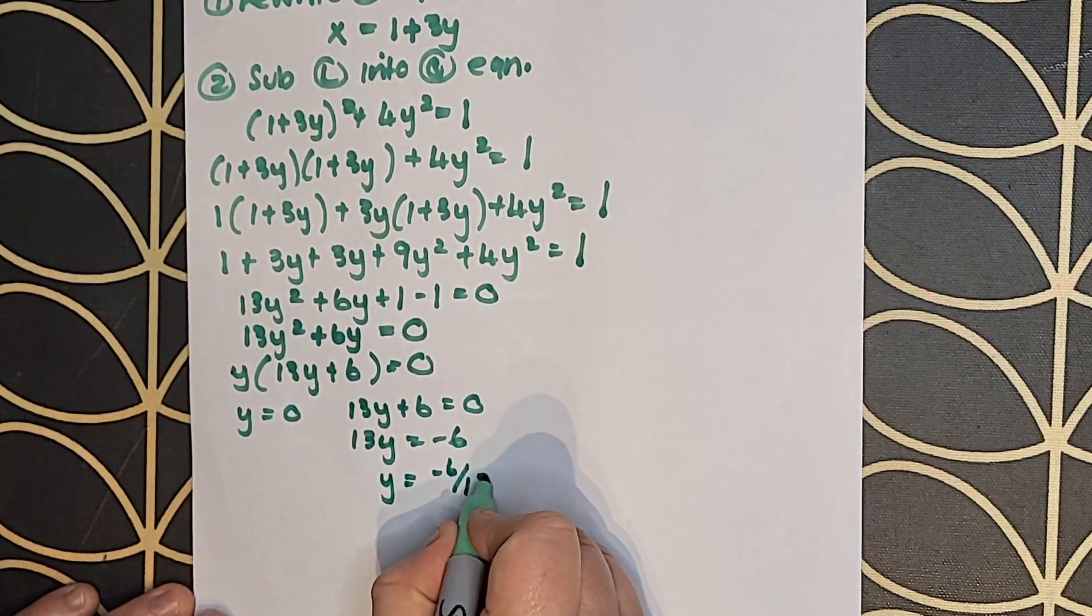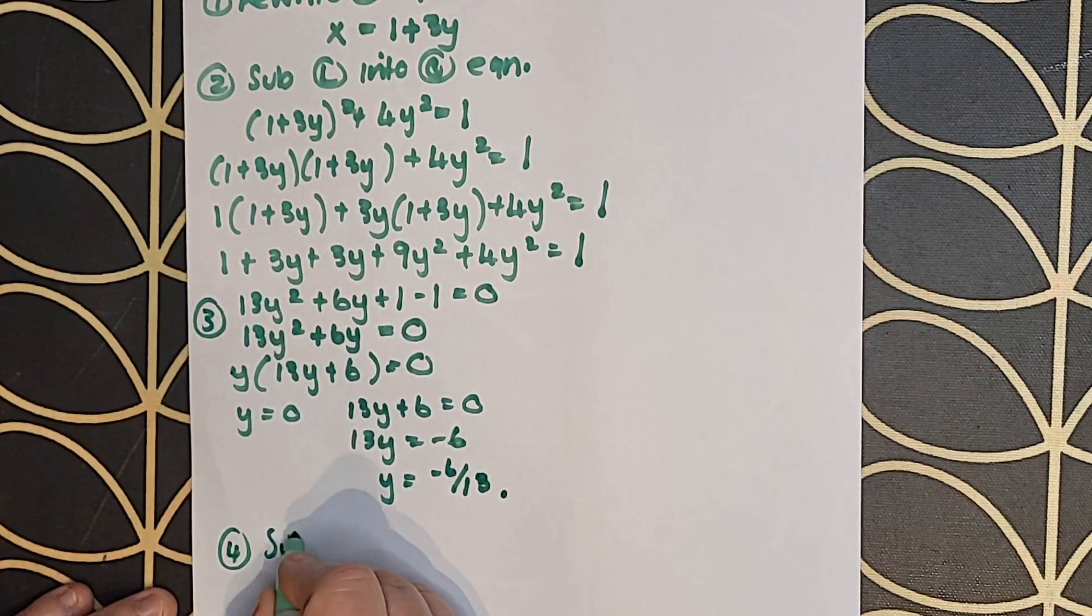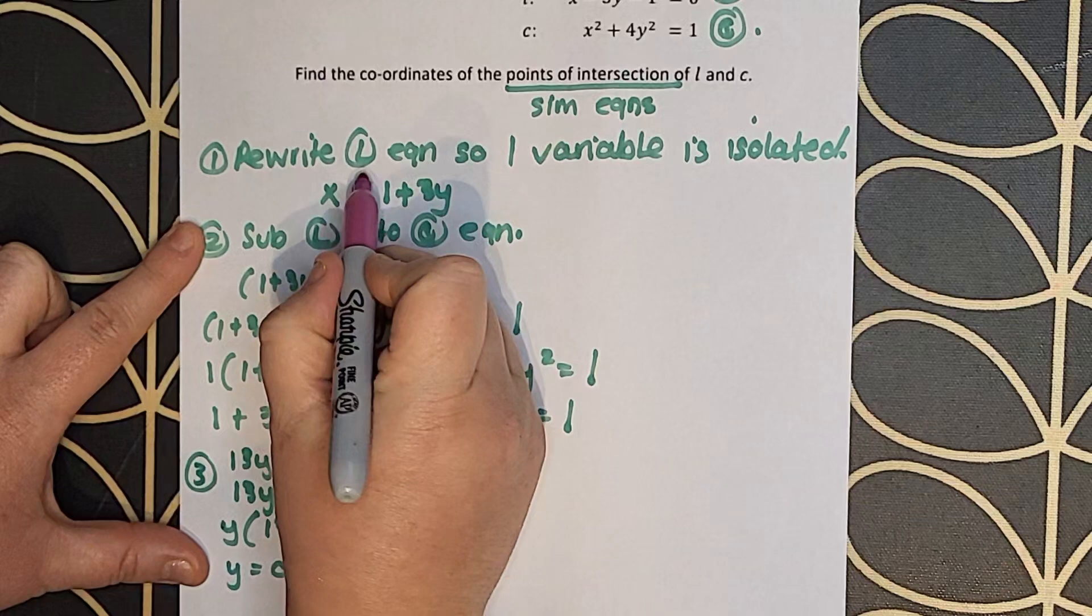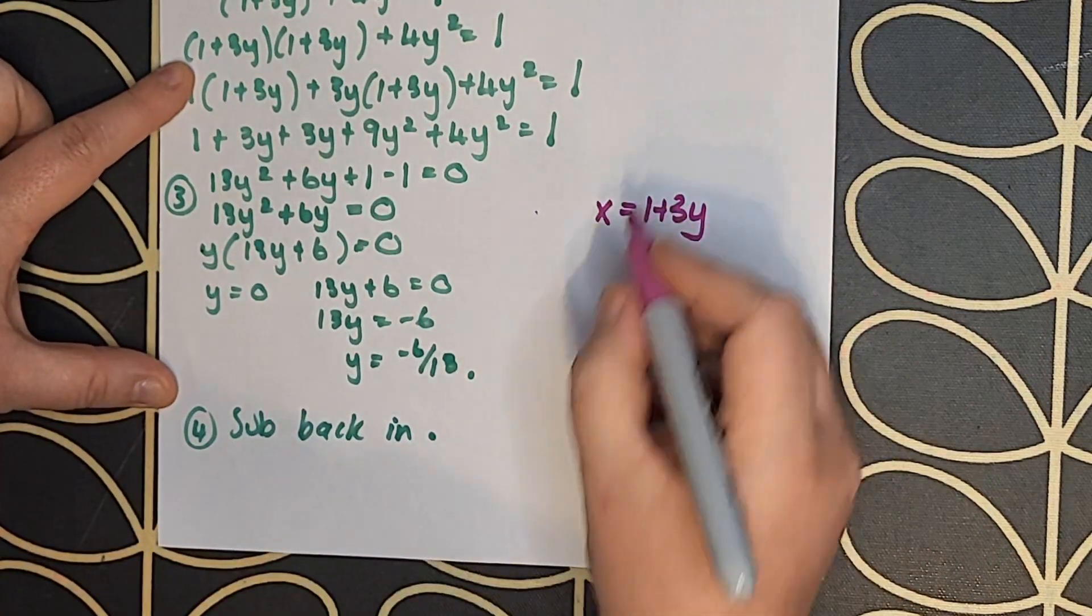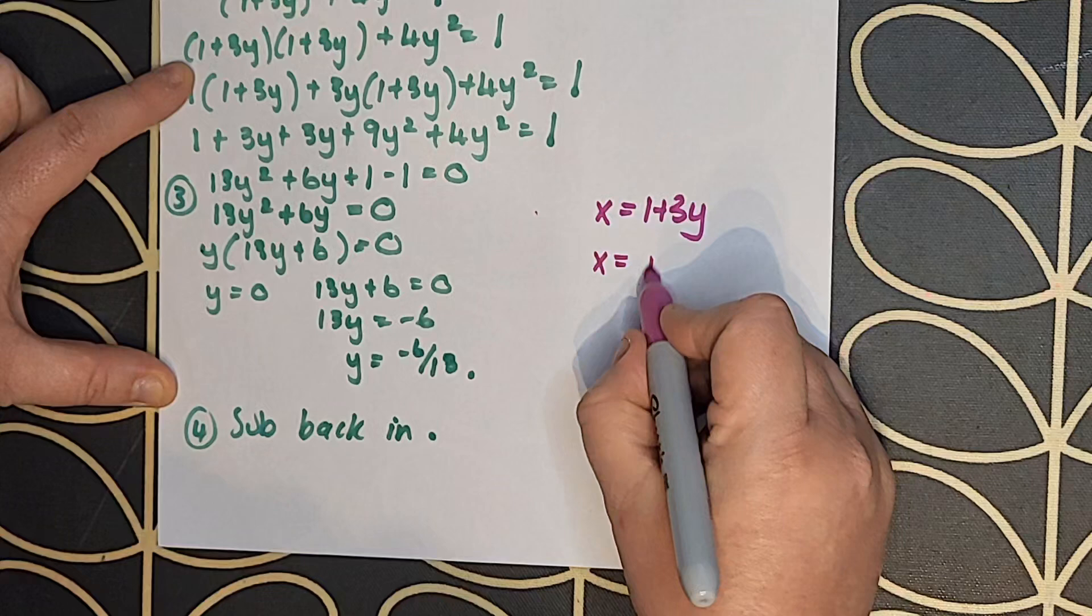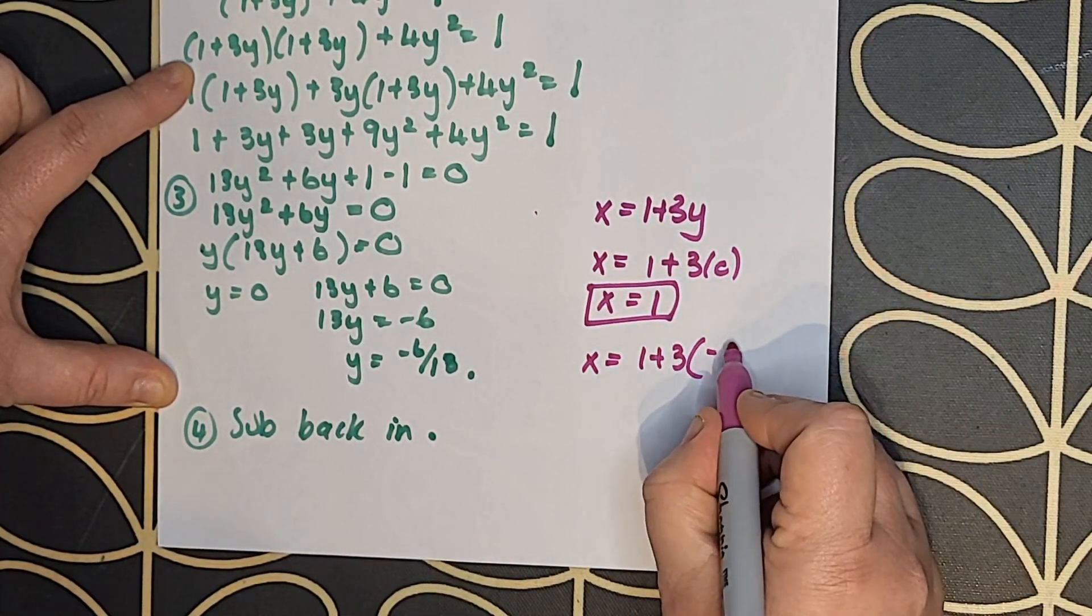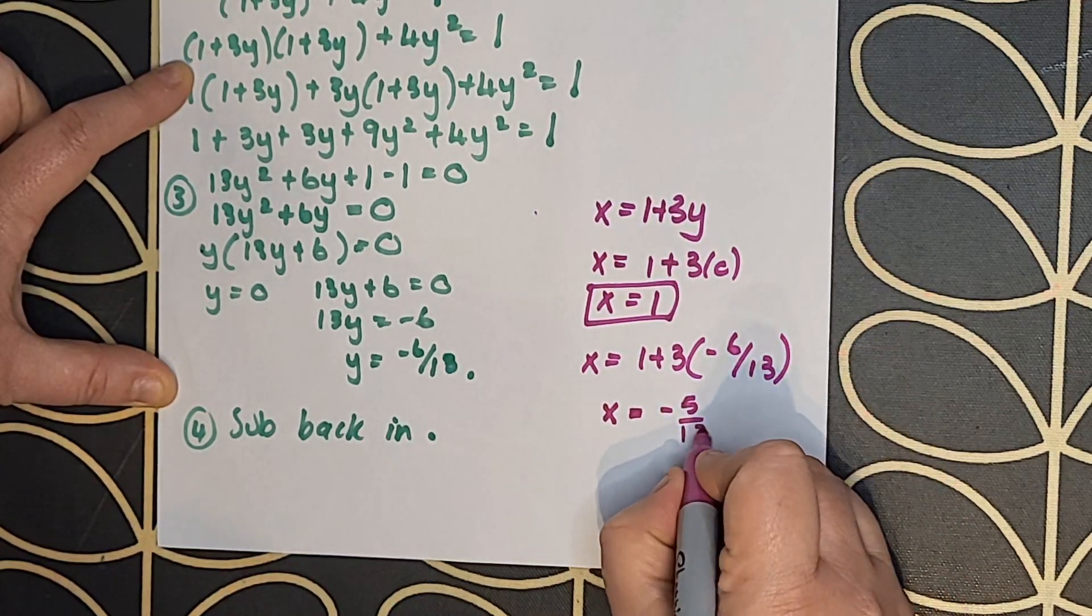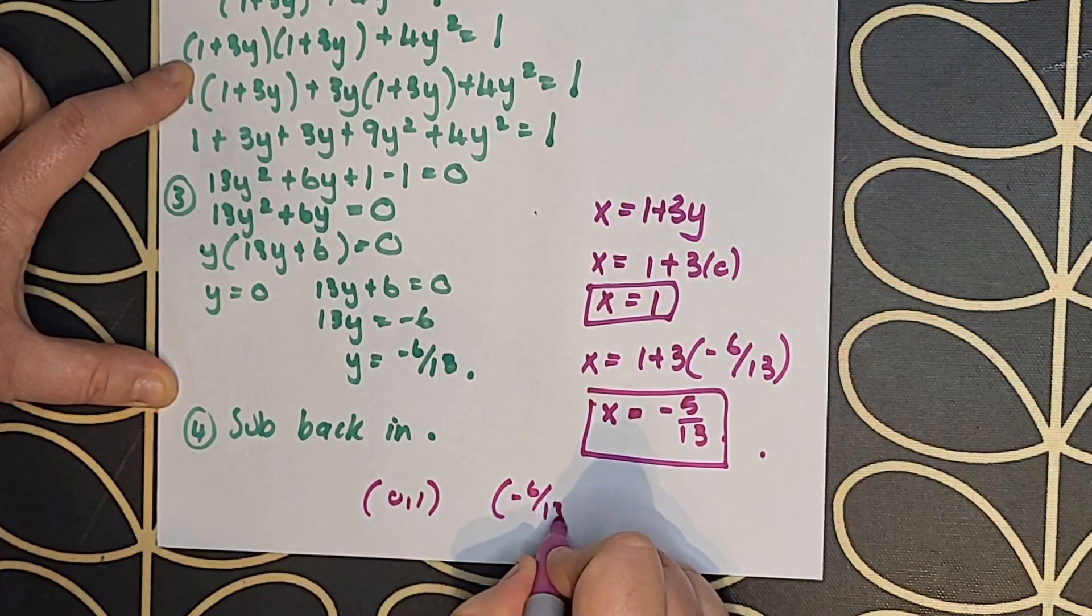Step four is to take the information I found, those y values, and substitute them back into the rearranged linear equation. I'm choosing the rearranged one because it makes our life easier. So I sub in y equals 0 and I get 1, and I sub in y equals minus 6 over 13 and I get minus 5 over 13. I just pop those little points down at the bottom of the page so it's perfectly matched up.